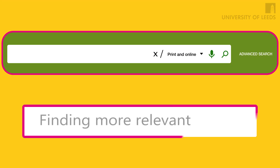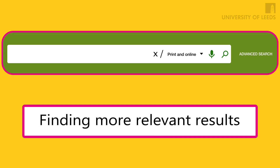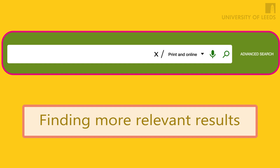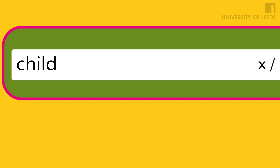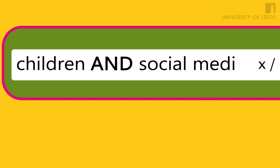So what if you have too many results or they are just not relevant to your topic? If this happens, you might need to try more specific keywords, such as Instagram instead of social media. You can add another concept to your search by combining your keywords with AND — for example, searching for children AND social media will narrow your results down to those containing both terms.